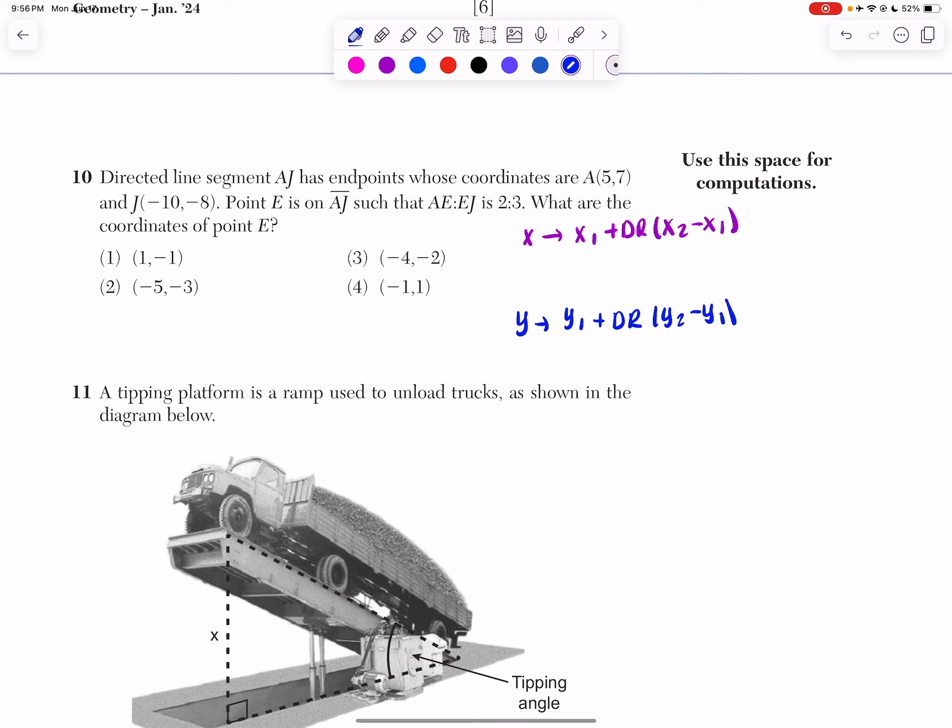So if my ratio is 2 to 3, that means my distance ratio is going to be 2 over (2 plus 3). So when I simplify my denominator, that gives me 2 fifths.